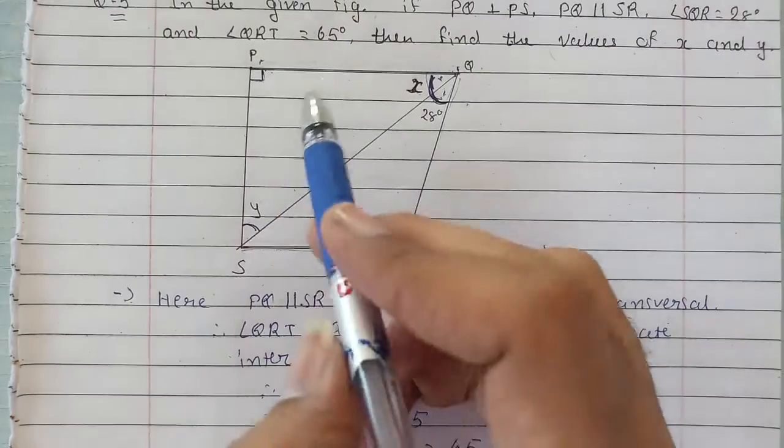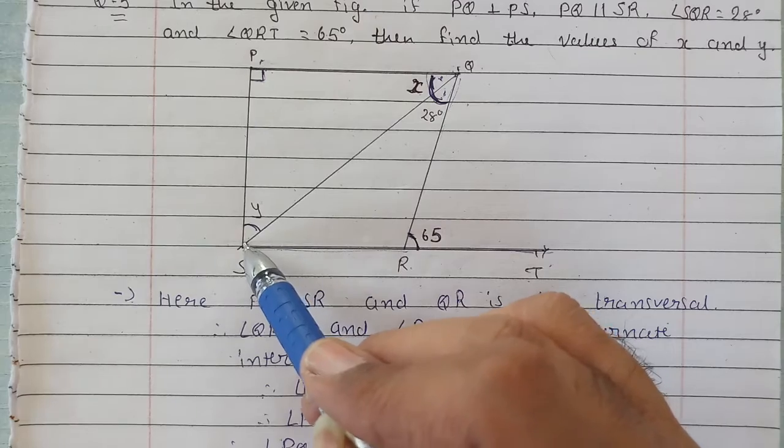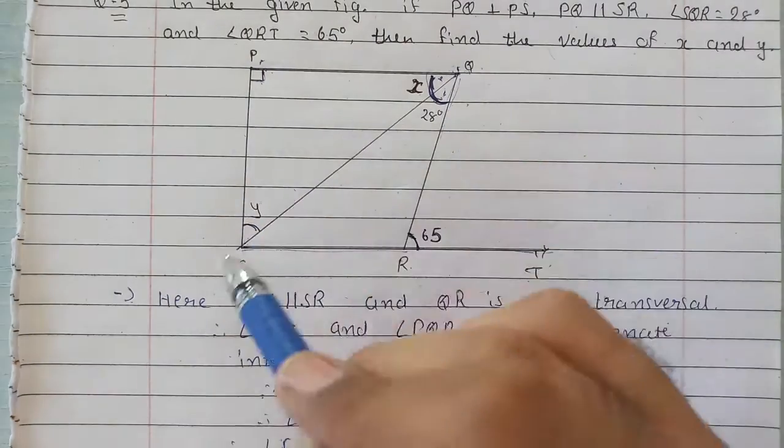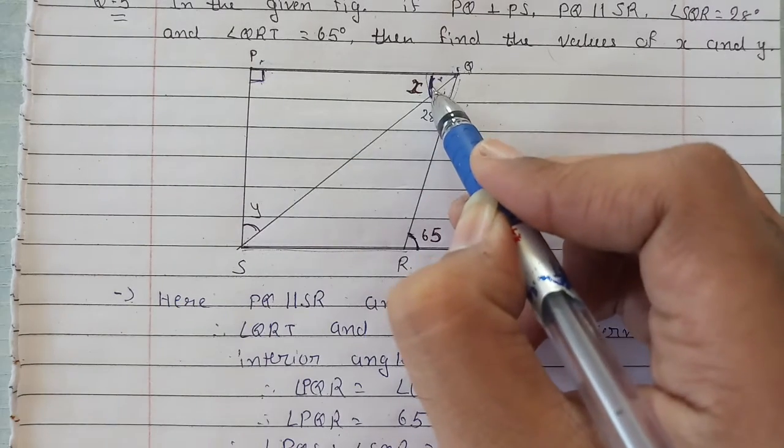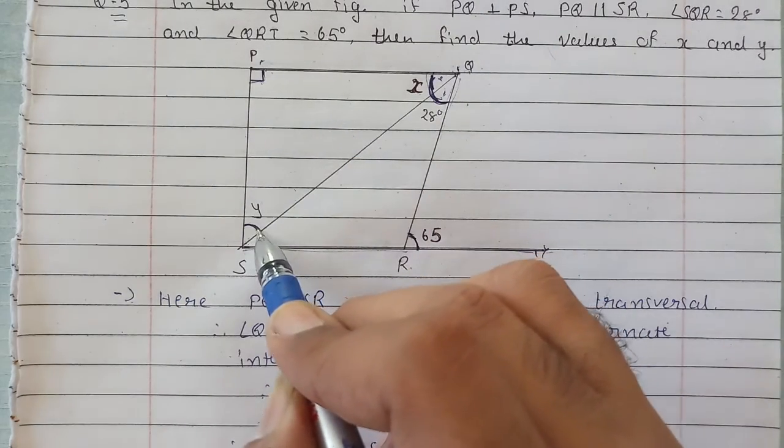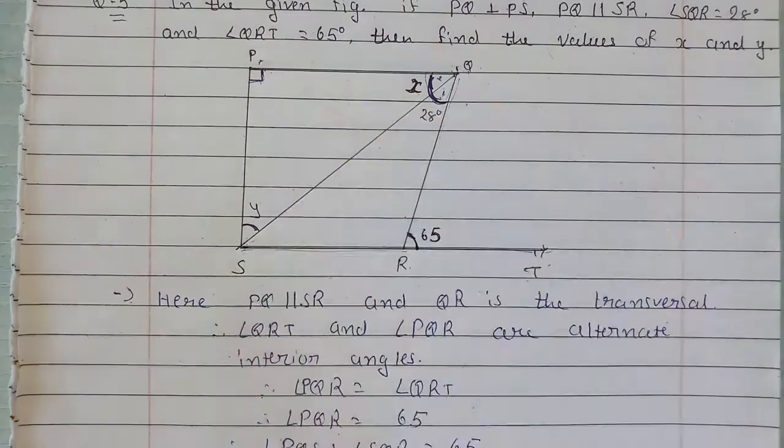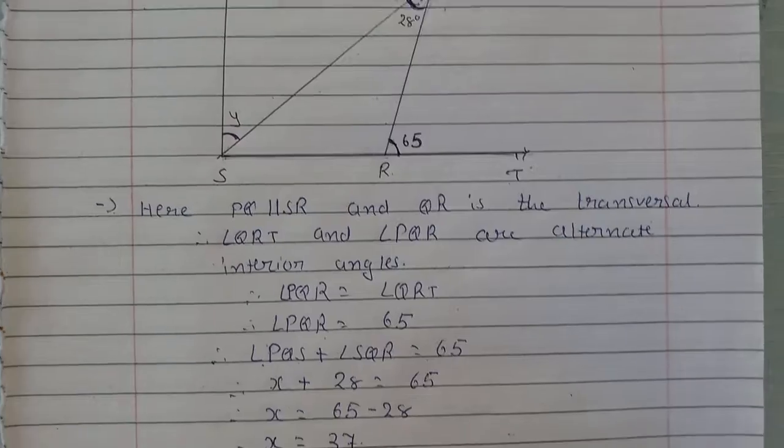Now we can see that we have triangle SPQ. Inside this triangle, this angle is 90, this angle is x, and this angle is y. That means if we add all three, that will be equal to 180. So let's write this down.